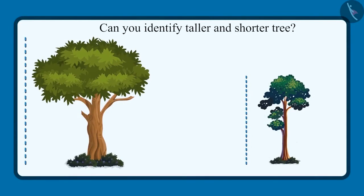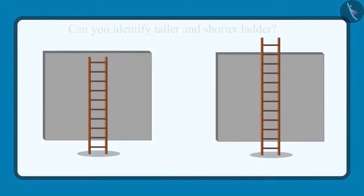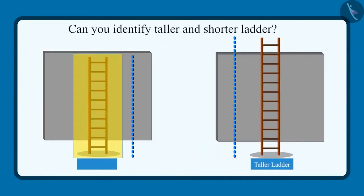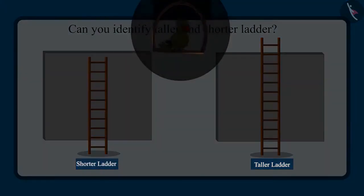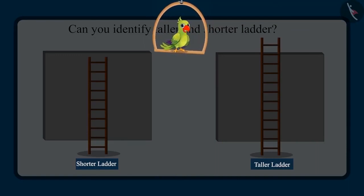So can you tell me which of these two trees is taller and which one is shorter? Yes, this tree is taller and this tree is shorter. And out of these two ladders, this ladder is taller and this ladder is shorter. So children, I hope that you enjoyed identifying and comparing taller and shorter objects. Now you can identify the tall and short objects around you and compare them to tell which is taller and which one is shorter.